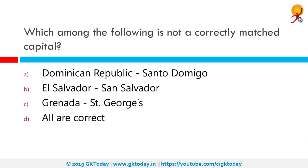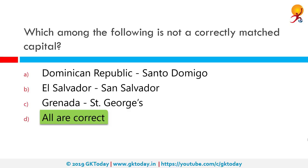Which among the following is not correctly matched as a capital? They are all correctly matched. The Dominican Republic's capital is Santo Domingo, El Salvador's capital is San Salvador, and Grenada's capital is Saint George's.